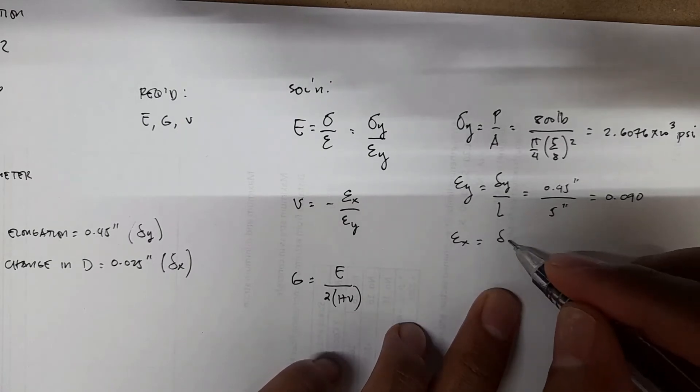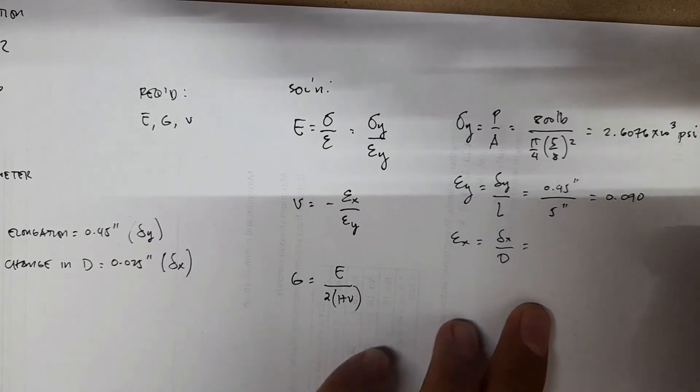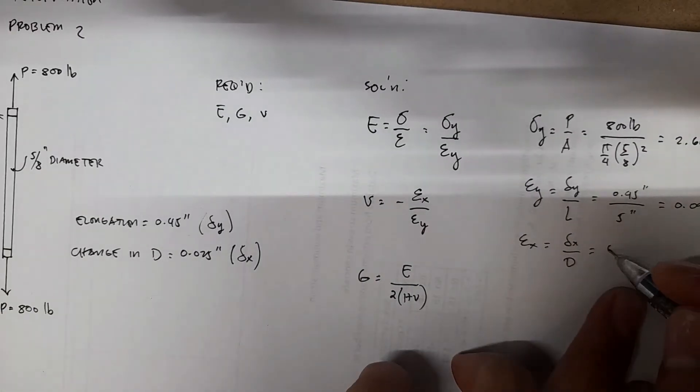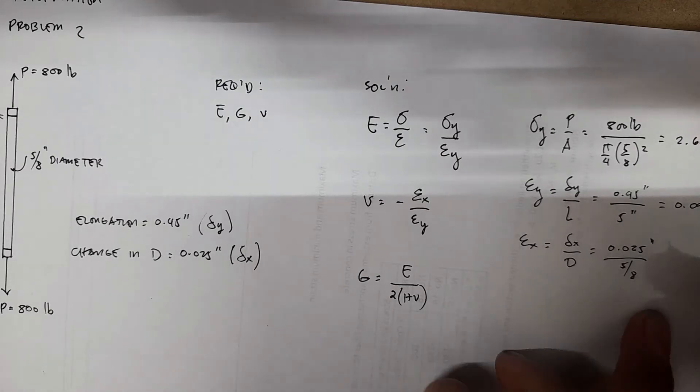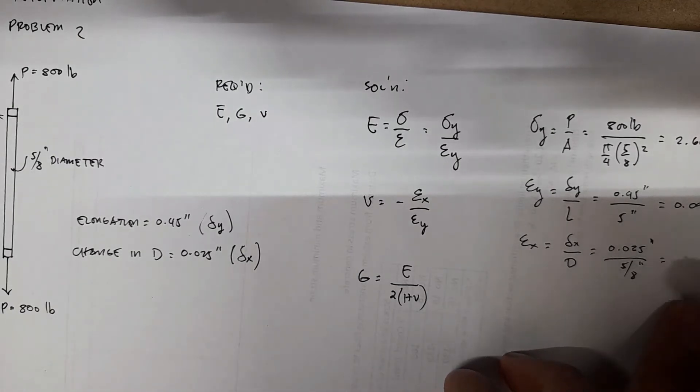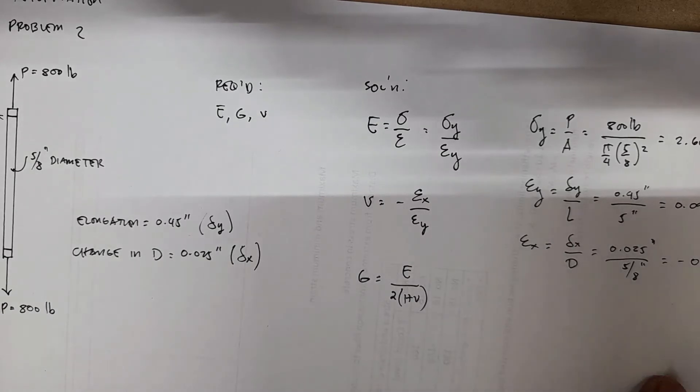Solve for strain x, which equals deformation x over the original diameter. Here we have 0.025 inches divided by the original diameter of five-eighths inches, which equals negative 0.040. Negative because the diameter is shortened, so it's a decrease in diameter.